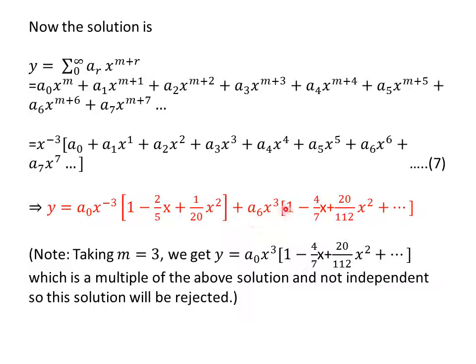Now, come to a six x cube into one minus four upon seven x plus twenty upon one hundred twelve x square and so on. Taking m equal to three, we will get y equal to a naught x cube into one minus four by seven x plus twenty upon one hundred twelve x square. You can easily get this solution from above equation. Now, this is a multiple of first solution. This is not any independent solution. So, we will reject it.